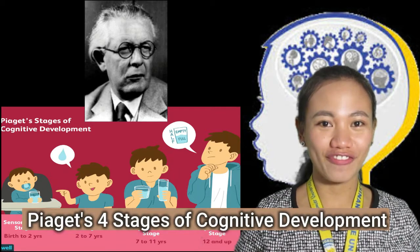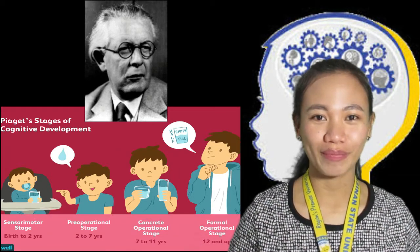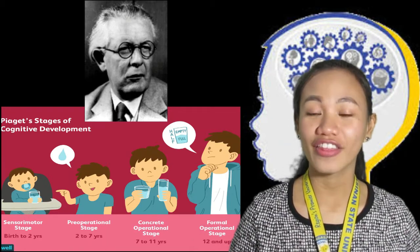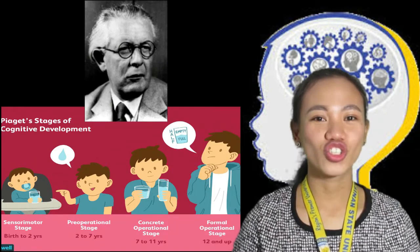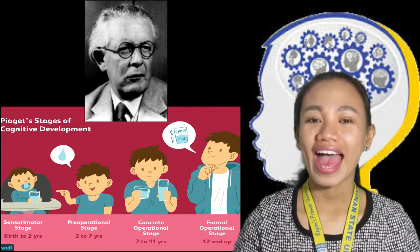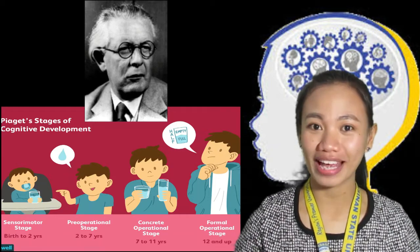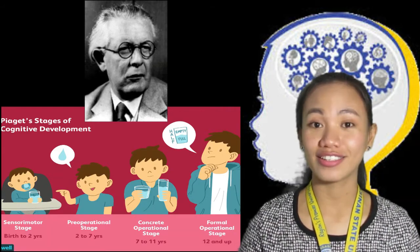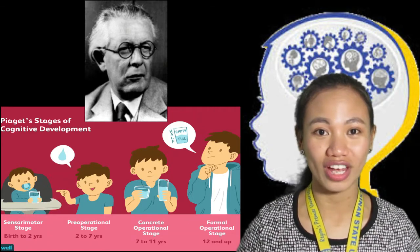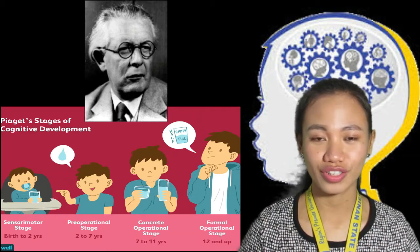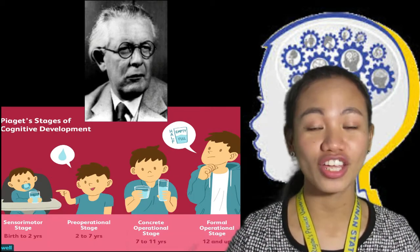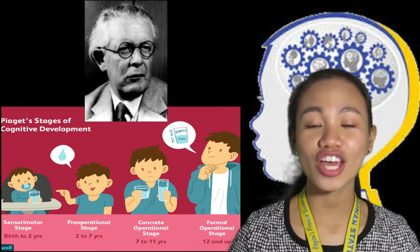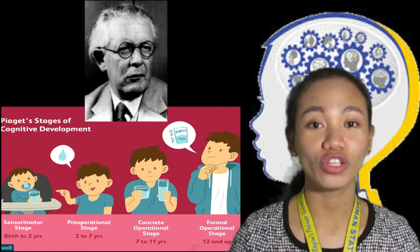Piaget's Four Stages of Cognitive Development: Piaget's theory suggests that children move through four different stages of intellectual development which reflect the increasing sophistication of children's thought. Each child goes through the stages in the same order, and child development is determined by biological maturation and interaction with the environment. Although no stage can be missed out, there are individual differences in the rate at which children progress through stages, and some individuals may never attain the later stages. Piaget did not claim that a particular stage was reached at a certain age, although descriptions of the stages often include an indication of the age at which the average child would reach each stage.